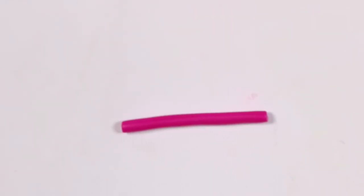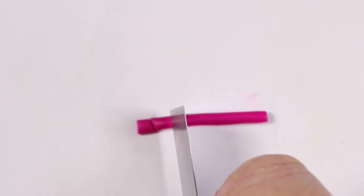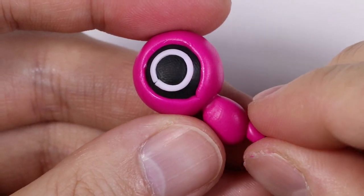And then for the legs, I'm going to take some pink clay, roll into a fat cylinder shape and cut out two little cylinders, but cut at a slight slant. And those legs will be placed onto the body.